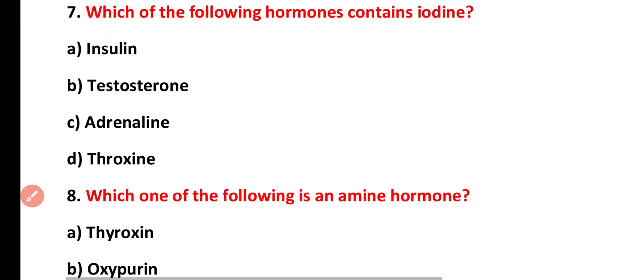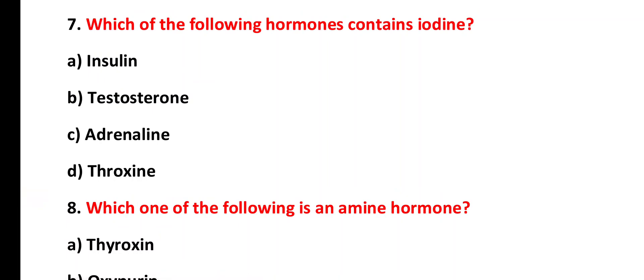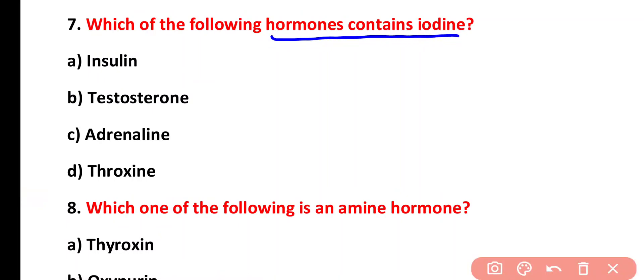Question seven: which of the following hormones contains iodine? Options: insulin, testosterone, adrenaline, thyroxine. The correct answer is option D. Thyroxine contains iodine.